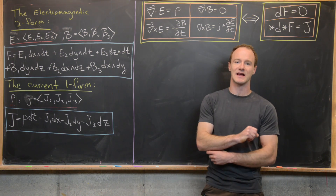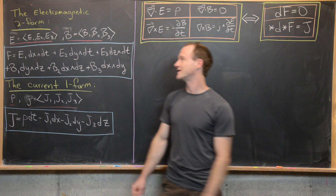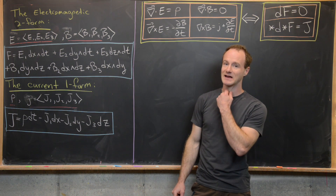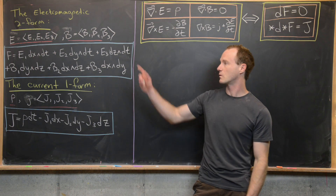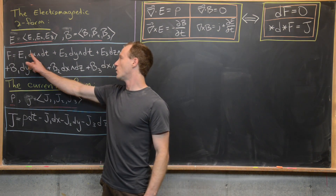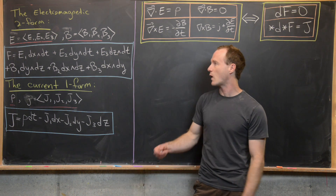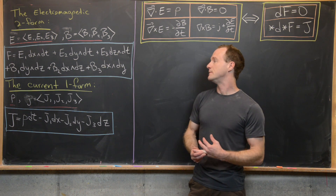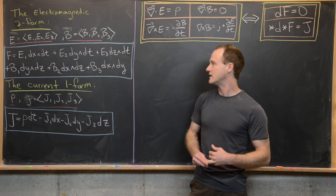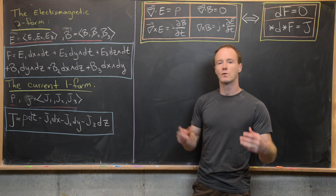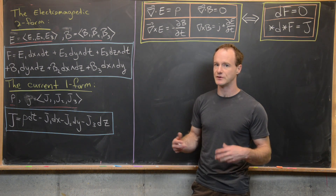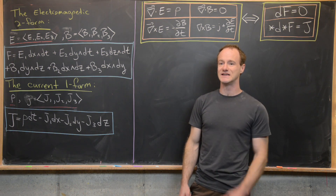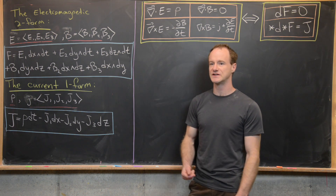We need the electromagnetic two-form. If we have the vector field E, the electric field, and the vector field B, the magnetic field, then we can define a two-form called F: E1 dx∧dt + E2 dy∧dt + E3 dz∧dt + B1 dy∧dz + B2 dx∧dz + B3 dx∧dy, where E1, E2, E3 and B1, B2, B3 are the component functions of these vector fields, all functions of x, y, z, and t — the three space directions and the time dimension.